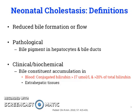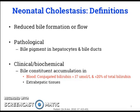Within the blood, the most common definition in neonates is a conjugated bilirubin that is greater than 17 micromoles per liter, and greater than 20% of the total bilirubin. When the constituents accumulate in extrahepatic tissues, for example such as the skin, the bilirubin may collect and cause a yellowish discoloration, which is referred to as jaundice.